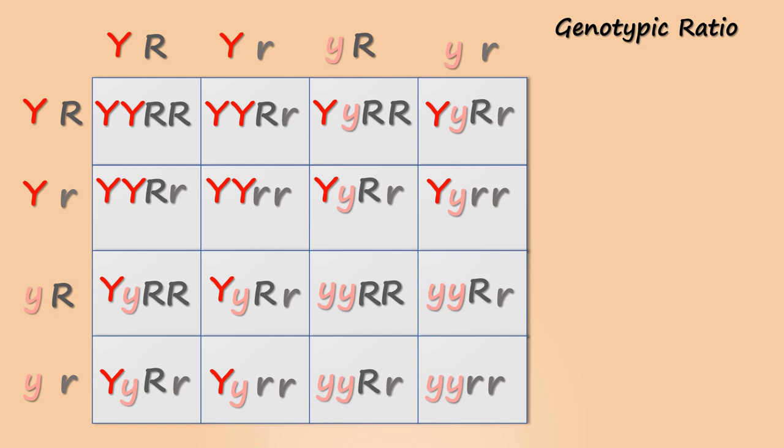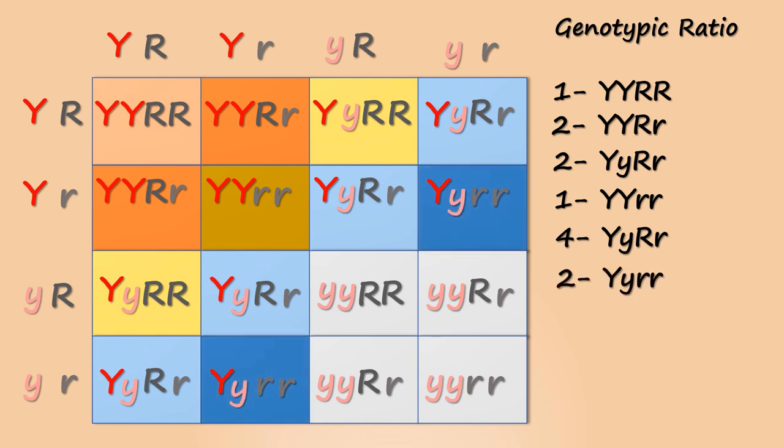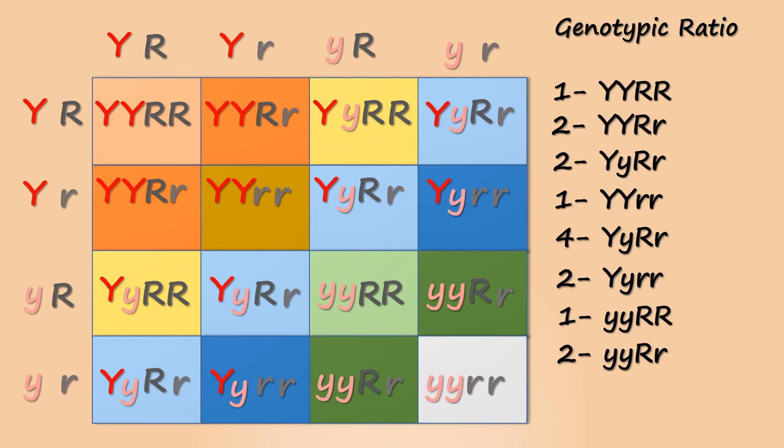In the genotypic ratio, you just need to count the similar looking gametes and write them. Like, I have only one capital Y, capital Y, capital R, capital R. I have two of these gametes. I have two of these gametes. I have one type of this gamete. Then I have four capital Y, small y, capital R, small r. Similarly, I have more genotypes and I will just write them down. As you can notice, there is a diagonal pattern shown here. This will happen if we do the Mendelian cross. This ratio and pattern will change depending upon the gametes. However, the method of solving remains the same.